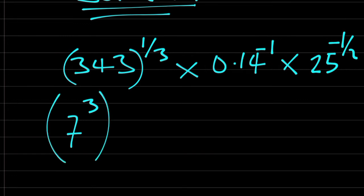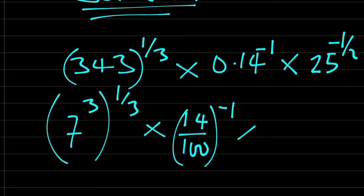7 raised to the power of 3, everything raised to the power of 1 over 3. Then times 0.14 is the same thing as 14 over 100, 10 raised to the power of minus 1, then times this is 5 raised to the power of 2, everything raised to the power of minus half.